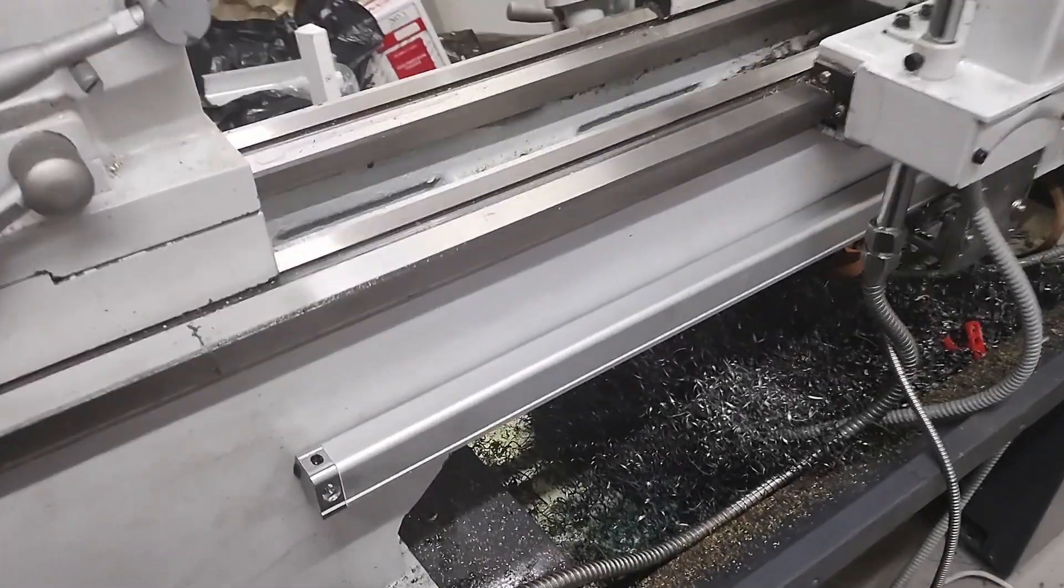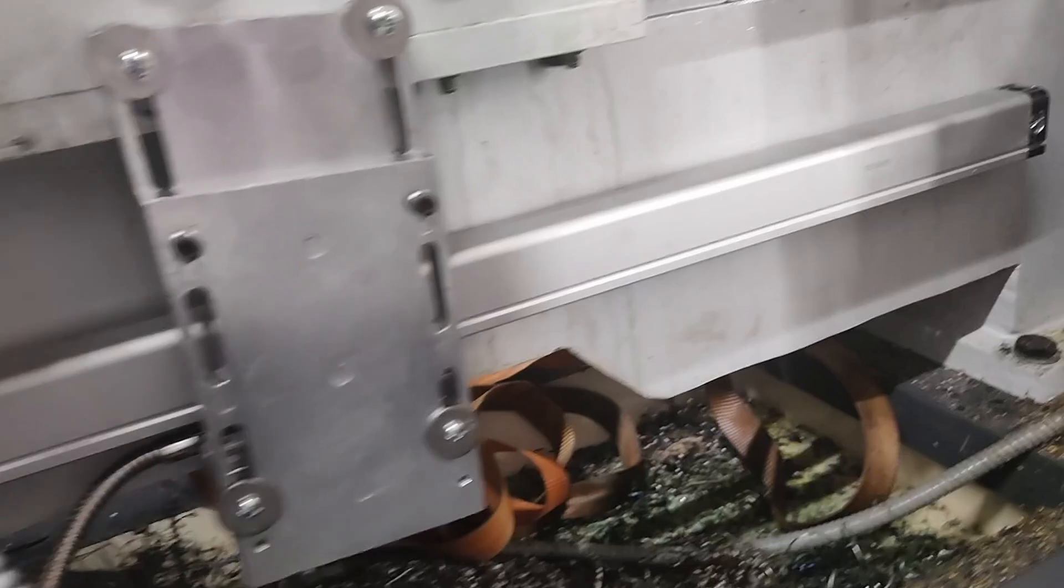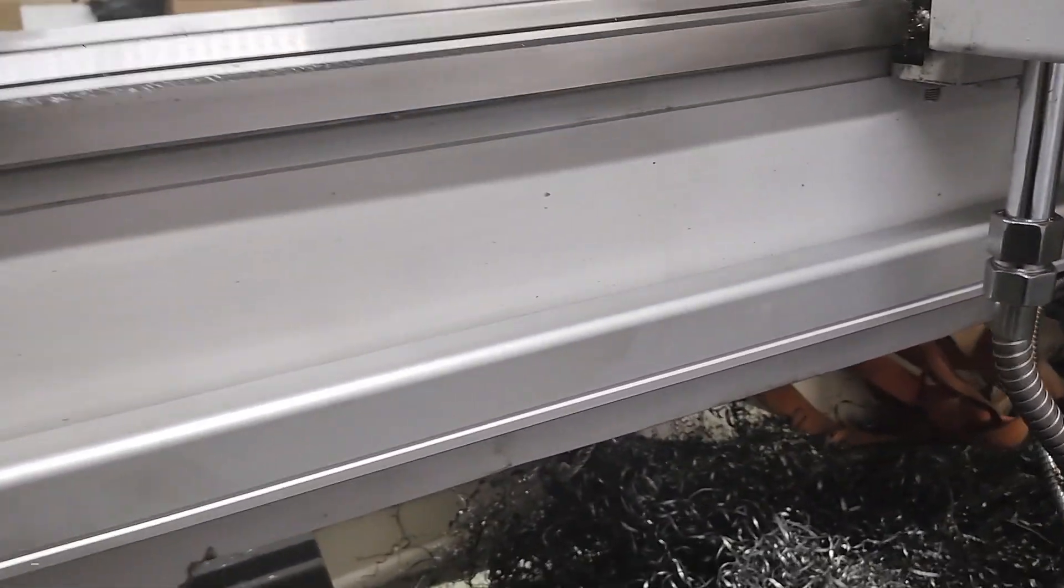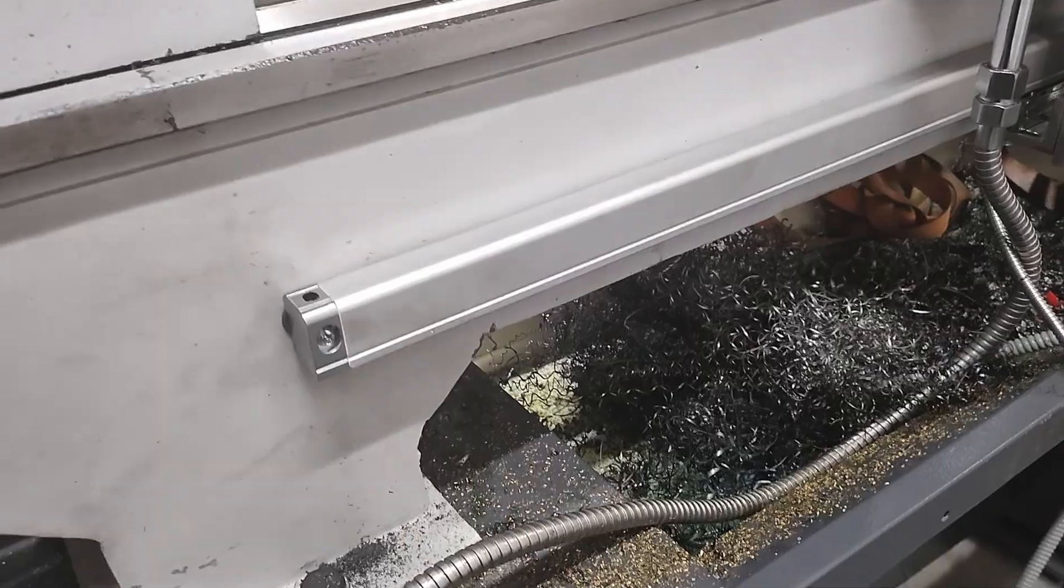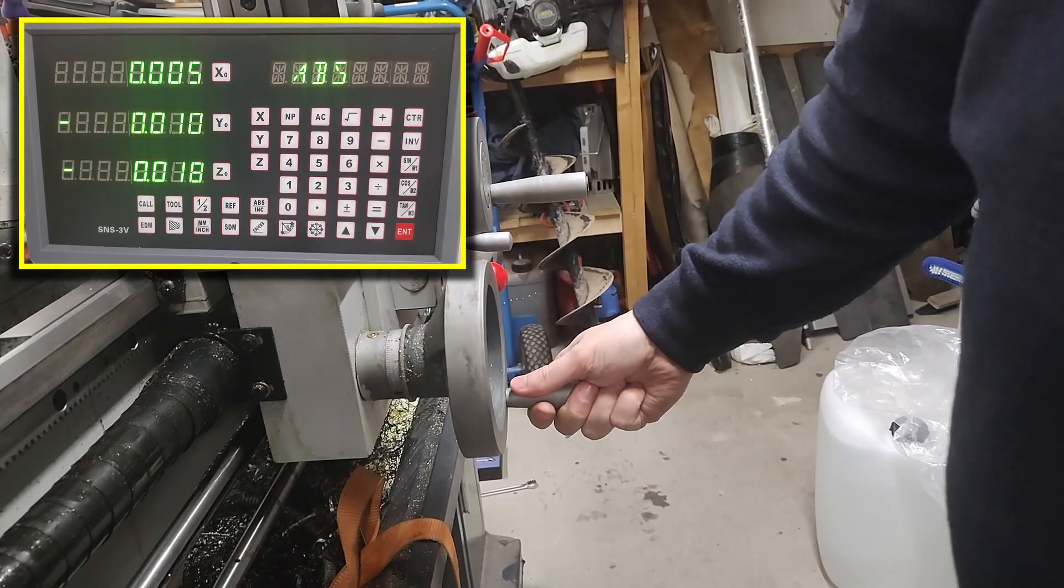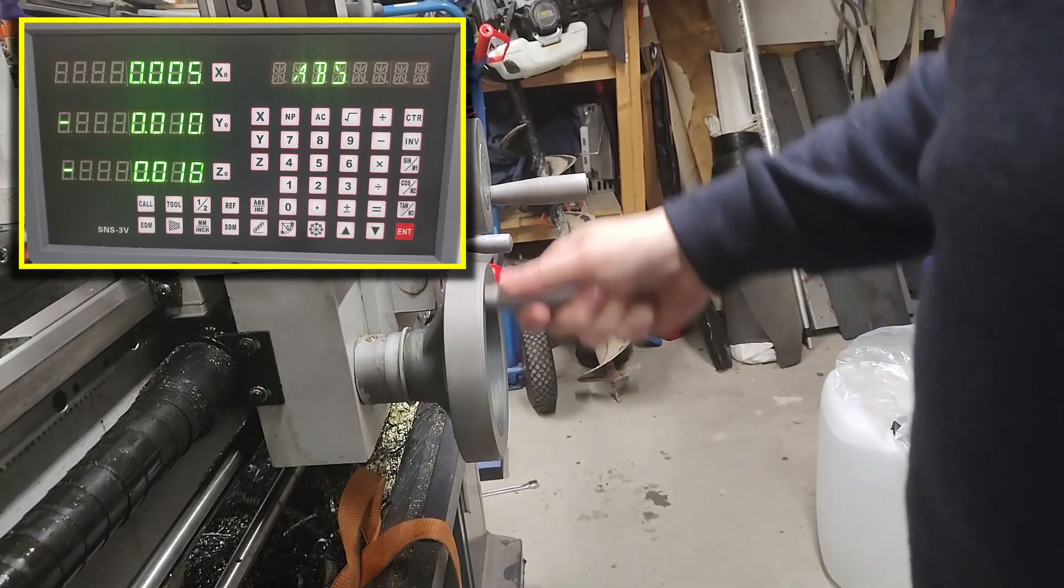Hi! So I ordered these linear scales as well as a DRO display separately from China. But after installing them, I discovered this issue that the numbers are just jumping back and forth here. This is no good.